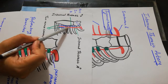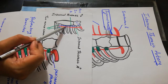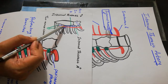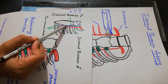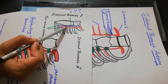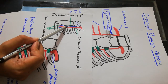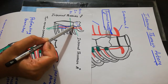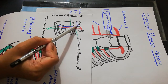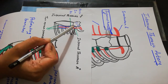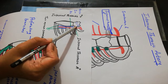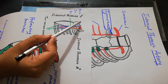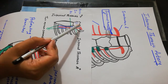The internal thoracic artery is accompanied by 2 venae comitantes. These 2 venae comitantes unite at the level of the 4th costal cartilage to form the internal thoracic vein. The internal thoracic vein finally opens into the brachiocephalic vein.